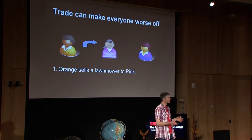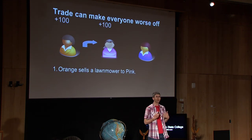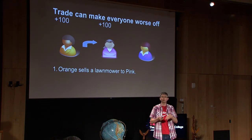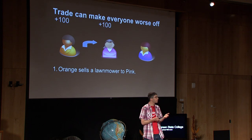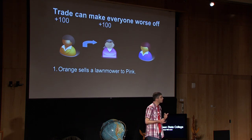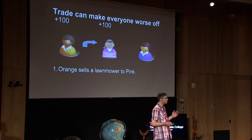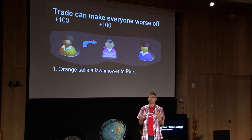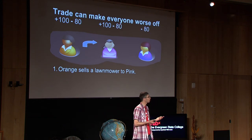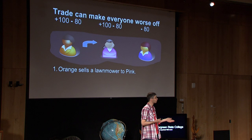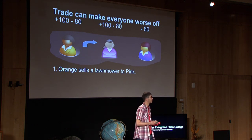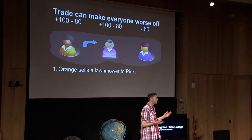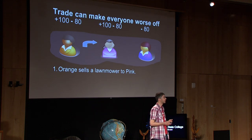We're going to see some trades. First, orange is going to sell a lawnmower to pink, and we can imagine they each get $100 in value from that trade. Orange sells a lawnmower for $100 that was just sitting in her garage. Pink would be willing to pay $200, but she only has to pay $100, so she gets $100 in net benefits. But when pink starts using that lawnmower, lawnmowers create some air pollution — maybe we can monetize the health impacts at $80 per person, not just for orange and pink, but also for blue. The impact on blue is what economists call a negative externality. Orange and pink each get $20 in net benefits from that trade, and the trade still makes sense to them.